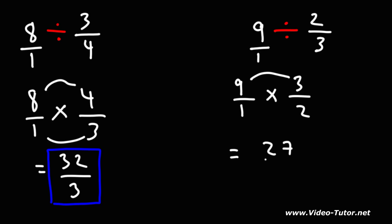1 times 2 is 2, so the answer as an improper fraction is going to be 27 over 2.